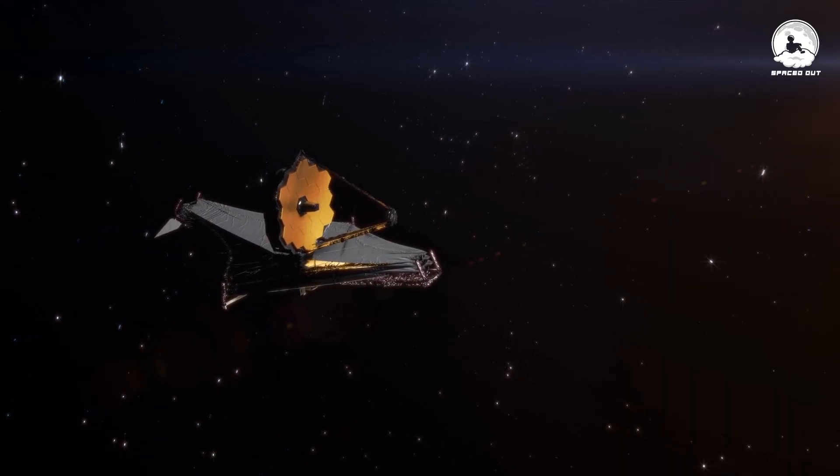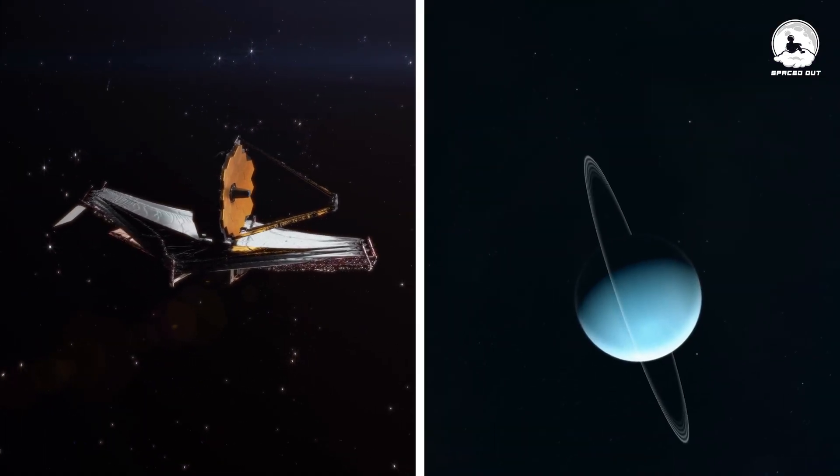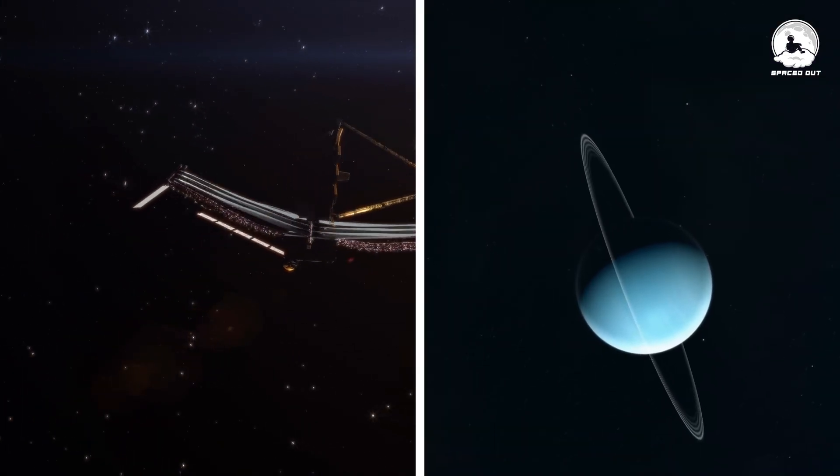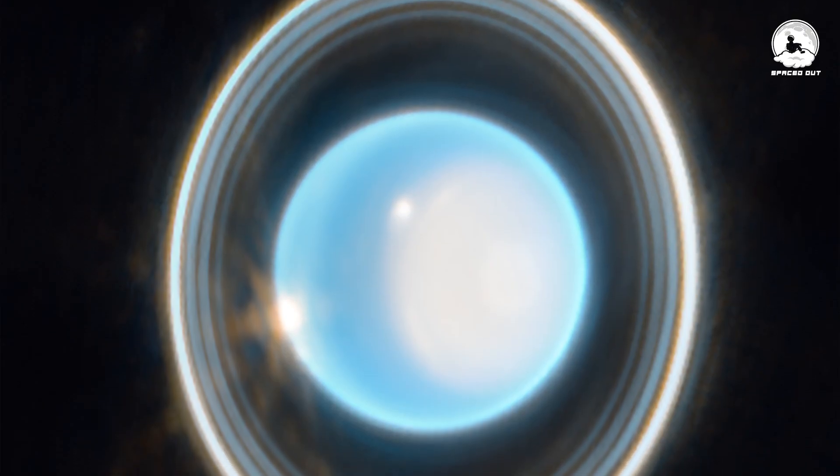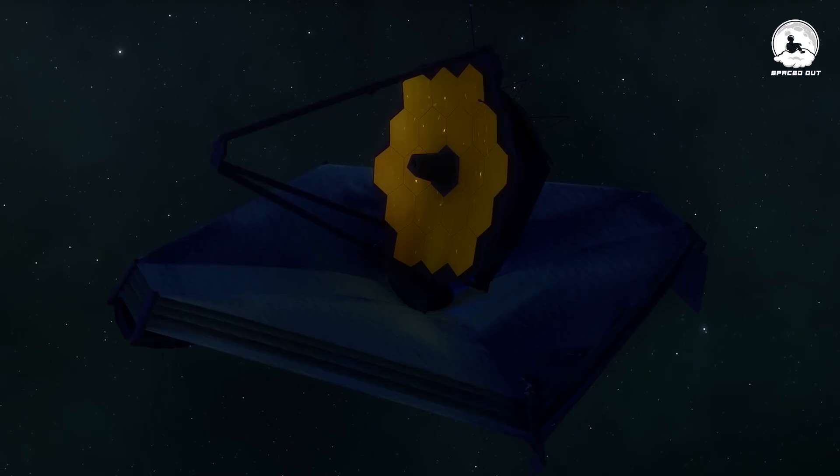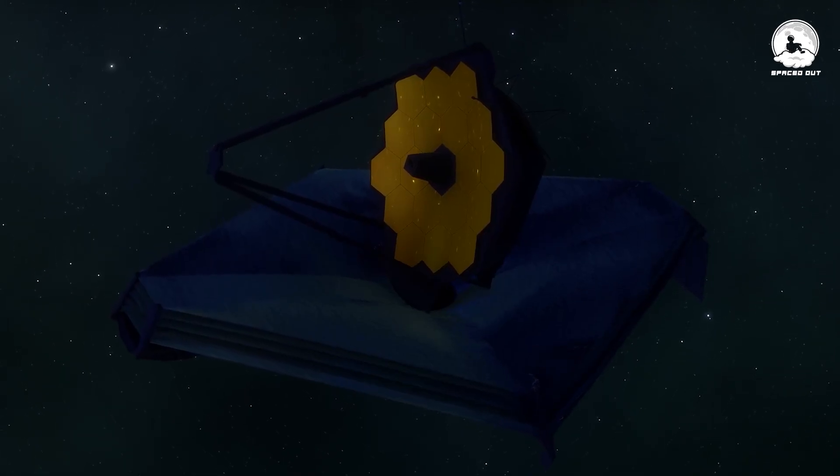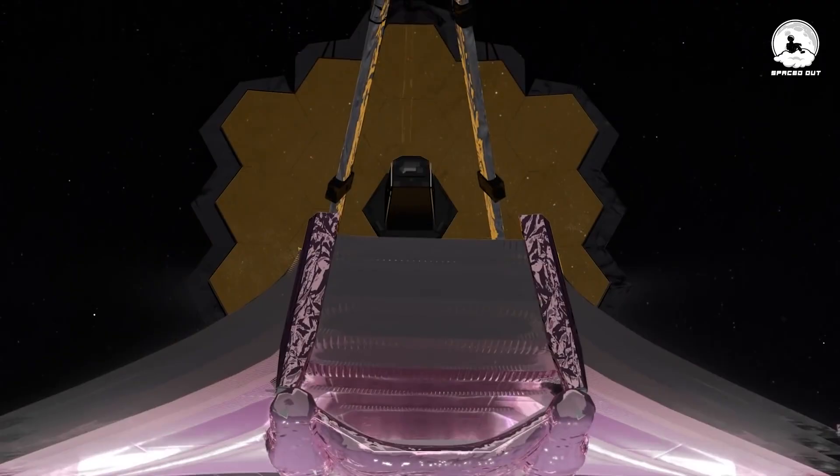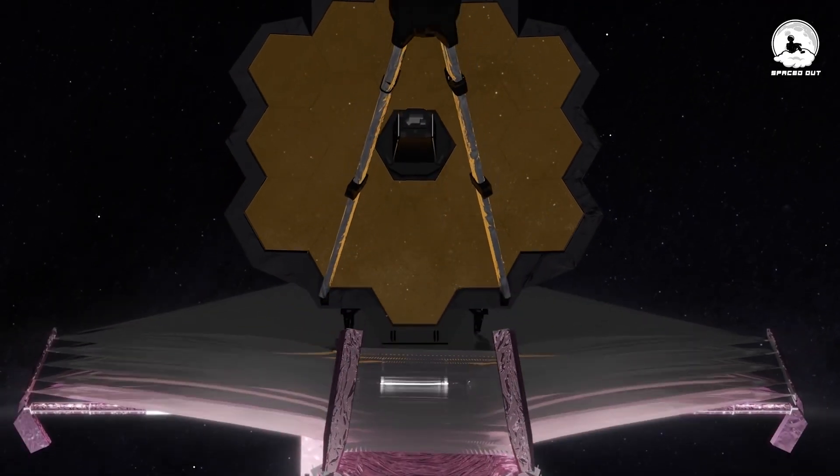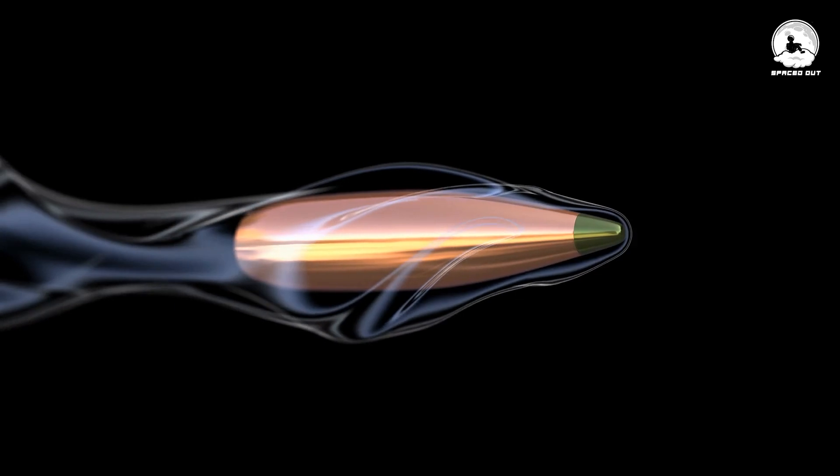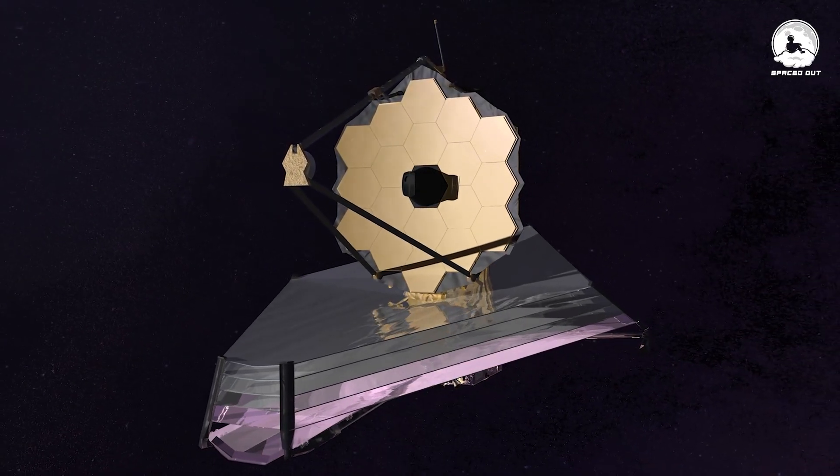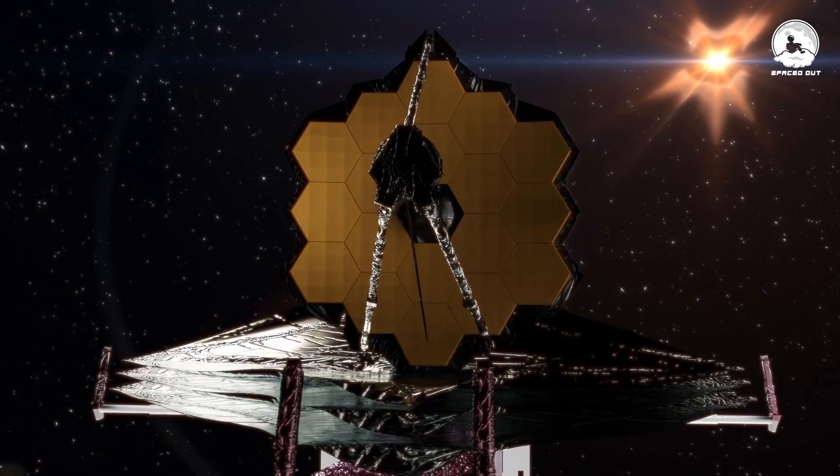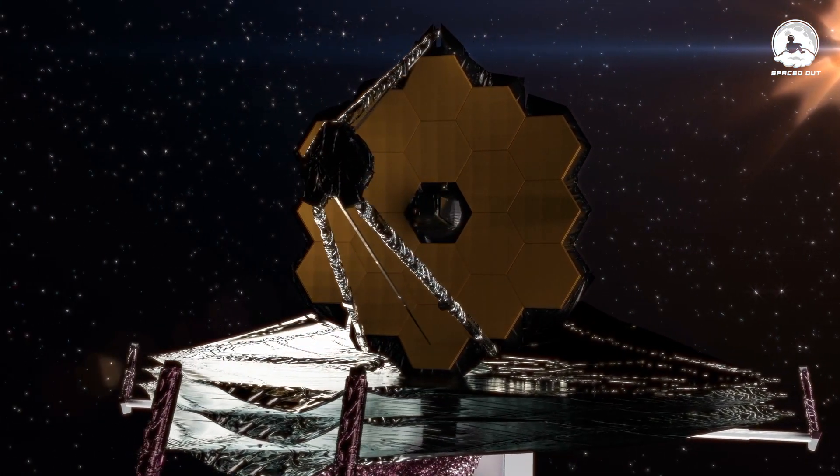Picture this: Webb had to carefully aim its mirror at Uranus, a mere speck in the vastness of space. It then had to fine-tune its settings to avoid making the image too bright or too dark. What's truly mind-boggling is that Webb accomplished all this while hurtling through space at an astonishing speed, faster than a speeding bullet. That's the level of difficulty Webb faced. But here's the impressive part: Webb aced the challenge.